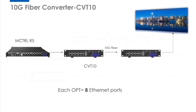For the last one, CVT10, it is also a 10G fiber converter. CVT10 has 10 Ethernet ports. It also has two working modes — sometimes each OPT port handles 8 Ethernet ports, and sometimes each OPT port can handle 10 Ethernet ports.